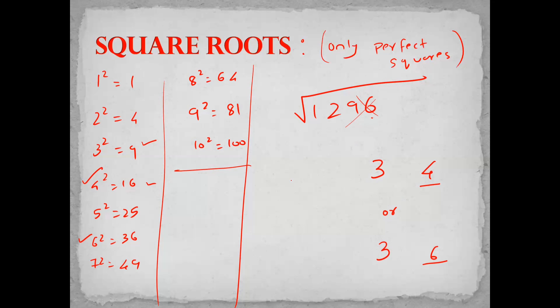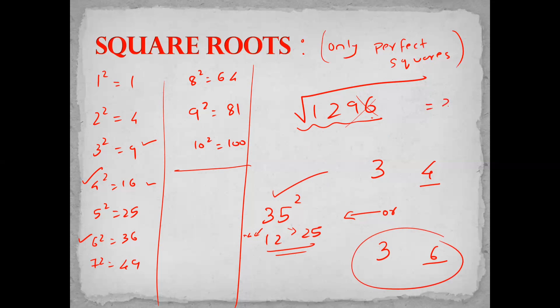How to decide which is the correct answer — 34 or 36? We are going to check the midpoint, which is 35. The square of 35 is very easy: 5²=25, and 3 into the next number 4 which is 12, so 35²=1225. Our number is 1296, which is greater than 1225. So the answer has to be greater than 35. The answer is 36. Square root of 1296 is 36.